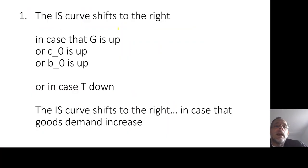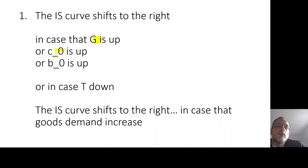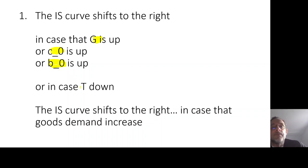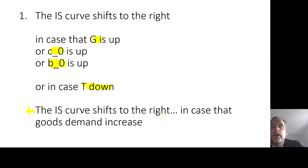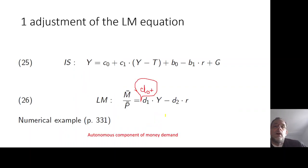To summarize all cases: the IS curve shifts to the right when the government increases government spending, when consumers increase the autonomous component of consumption, when managers increase the autonomous component of investment, or when the government lowers taxes. In short, the IS curve shifts to the right whenever goods demand increases.